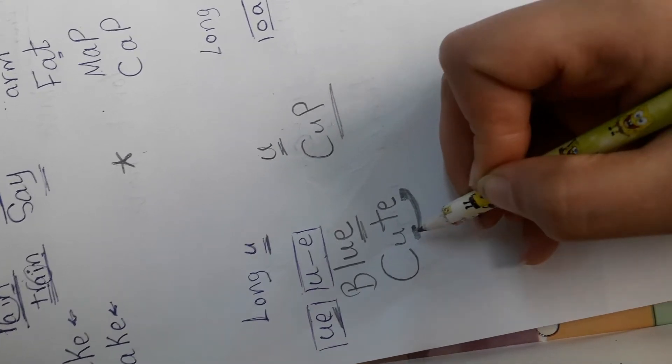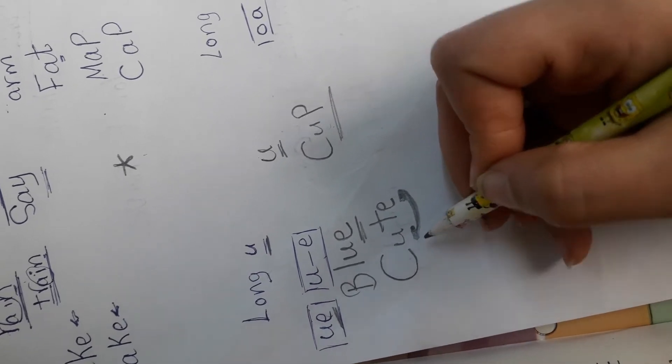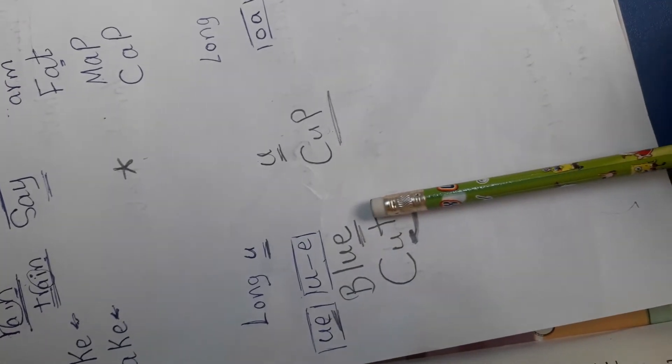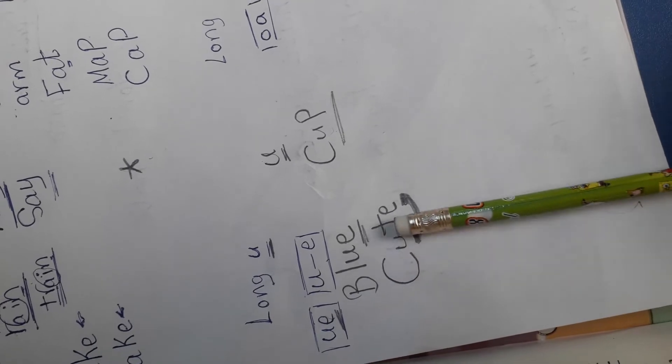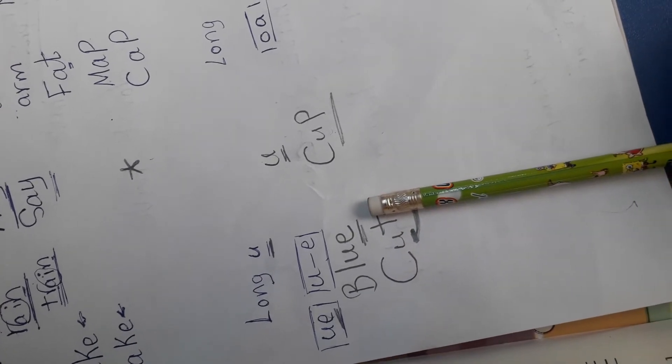It will be 'cut,' and with letter e it will be 'cute.' This is long u.